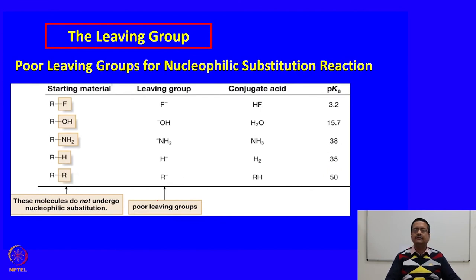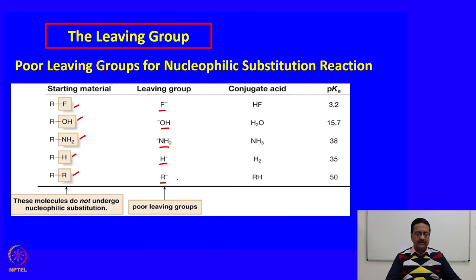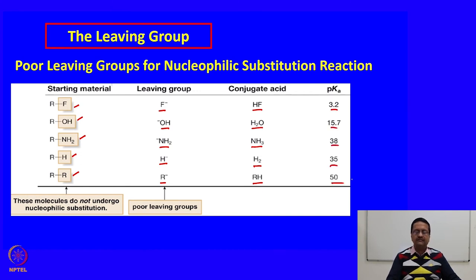On the other hand, there are many poor leaving groups: alkyl fluoride, alcohol (OH⁻), amine (NH₂⁻), simple R-H or an alkane (H⁻, R⁻). The corresponding conjugate acids of these groups have very high pKa values, meaning they are very weak acids, and these groups are therefore poor leaving groups.